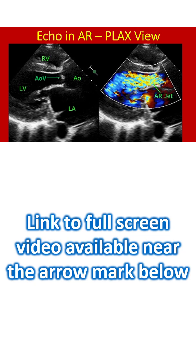The AR jet is almost filling the left ventricular outflow tract and extends well into the left ventricle beyond the anterior mitral leaflet, indicating free aortic regurgitation. Dilated left ventricle, aorta, and left atrium also suggest that the AR is severe.